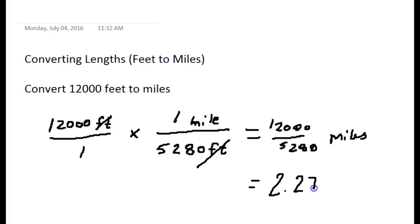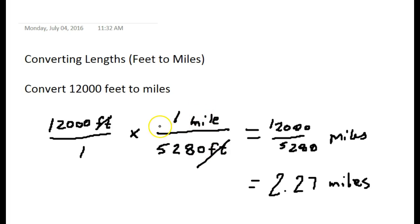The problem I see students have on these is they will invert their conversions — put miles on the bottom and feet on the top — which wouldn't make sense because you'd end up with feet times feet on top, giving square feet over miles. So just be careful about keeping your conversion fractions oriented correctly.